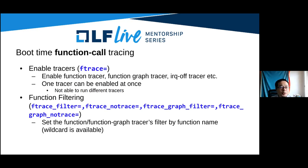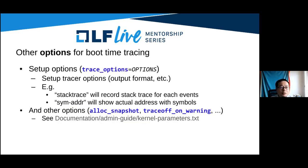You can also use the function and function call graph and other various tracers like IRQs off, wakeup, or preempt off by using the ftrace option. Note that you can specify only one tracer at a time. Optionally, you can filter the trace function by its name using ftrace_filter and ftrace_notrace for function tracing, and ftrace_graph_filter and ftrace_graph_notrace for the function call graph tracer.